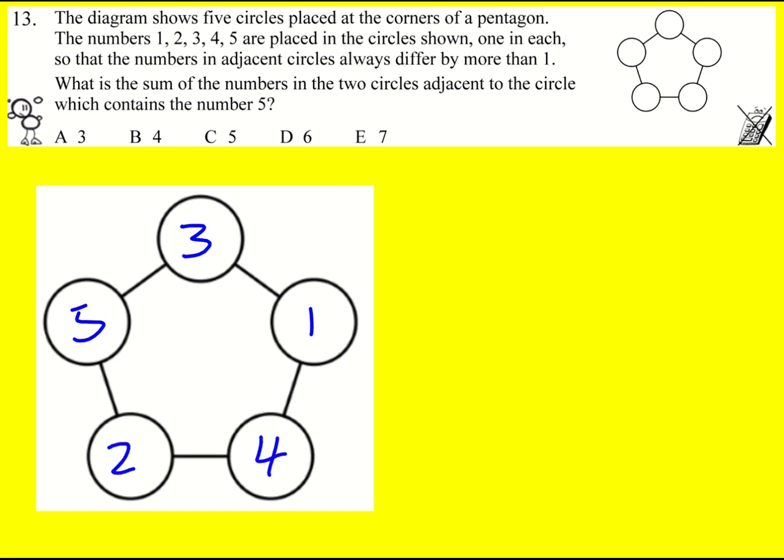So what are the numbers in the two circles adjacent to five? Five is going to have to be next to two and three. It can't be next to the one because the one has to be next to three and four. So the answer is going to be five.